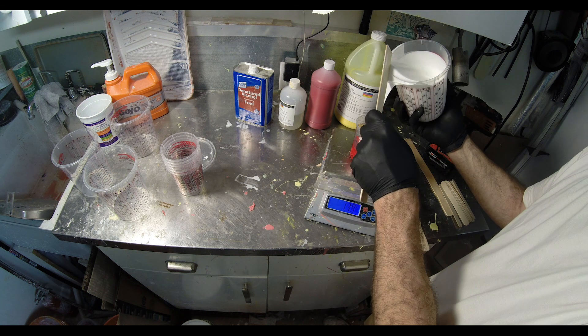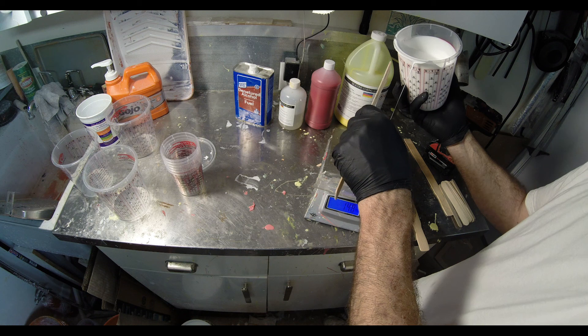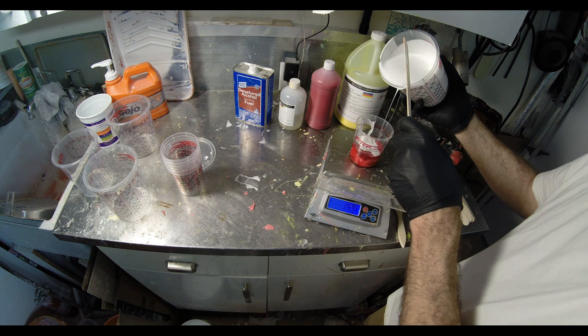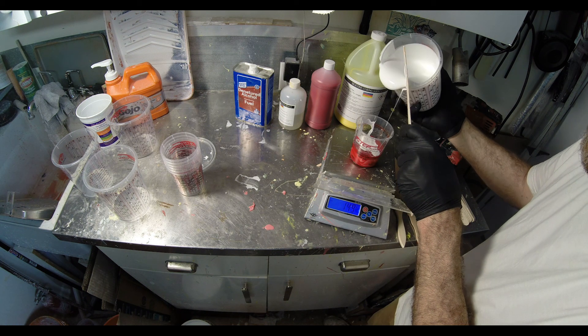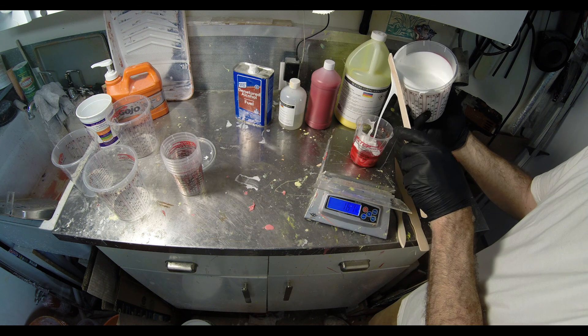I like to pour the silicone out of the five gallon bucket and into a more manageable sized container. It makes it a little easier to pour especially when I'm doing small batches.